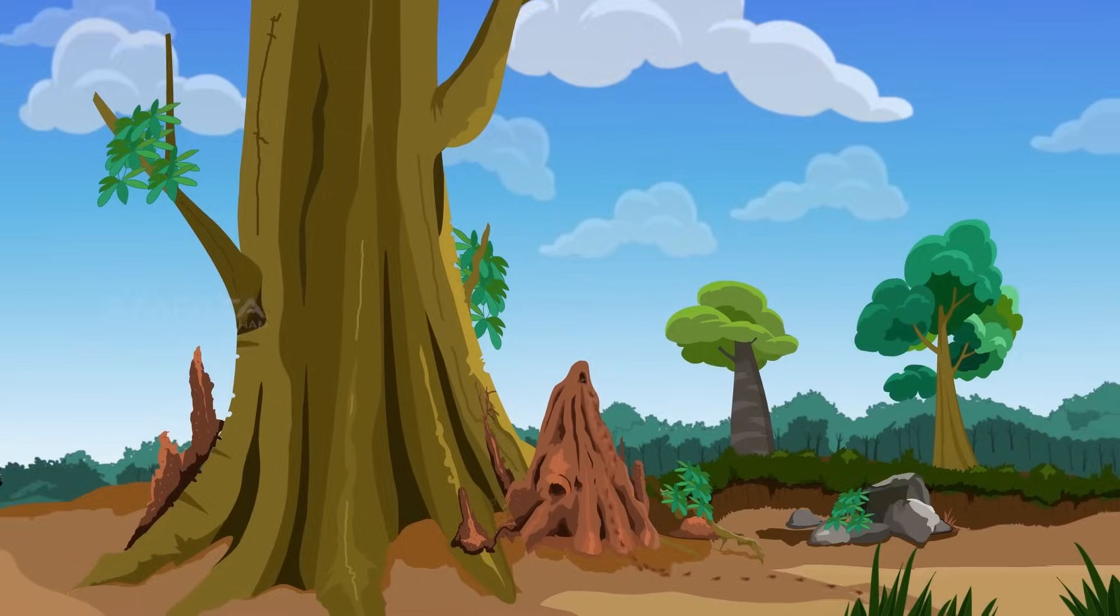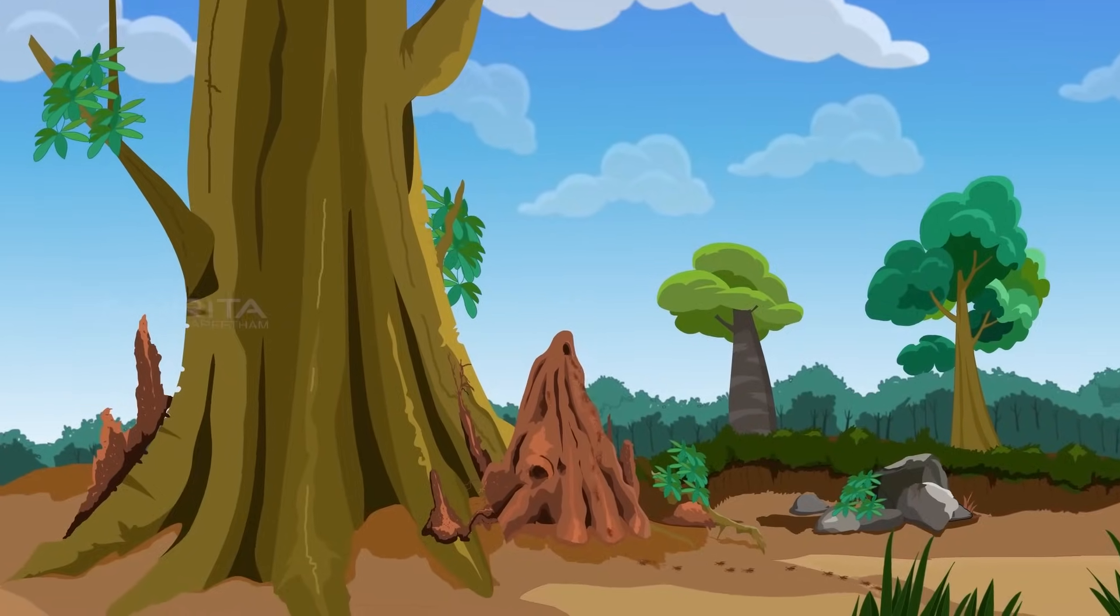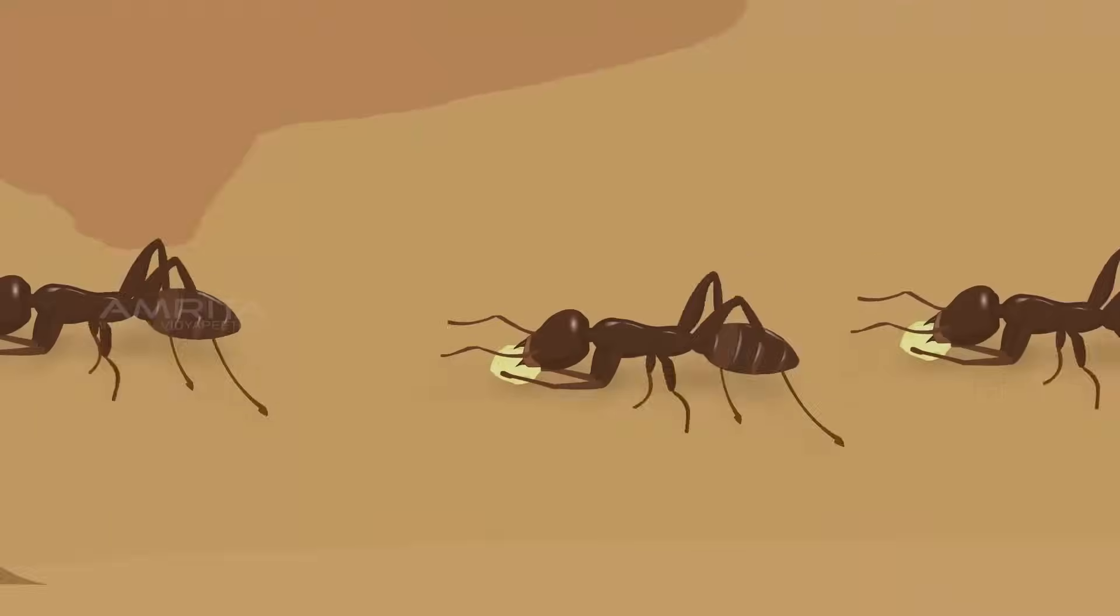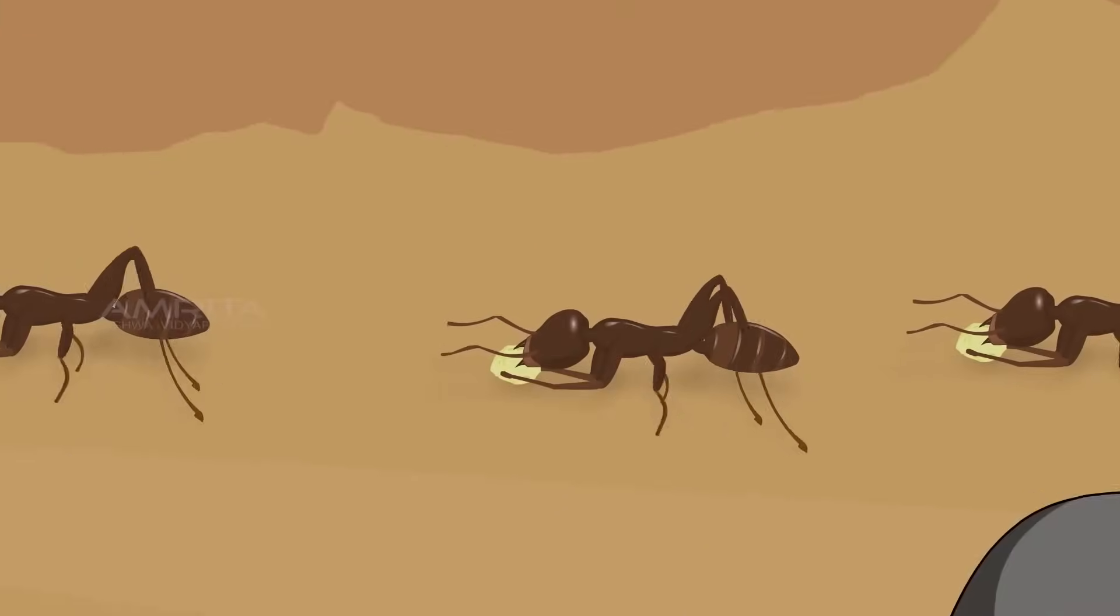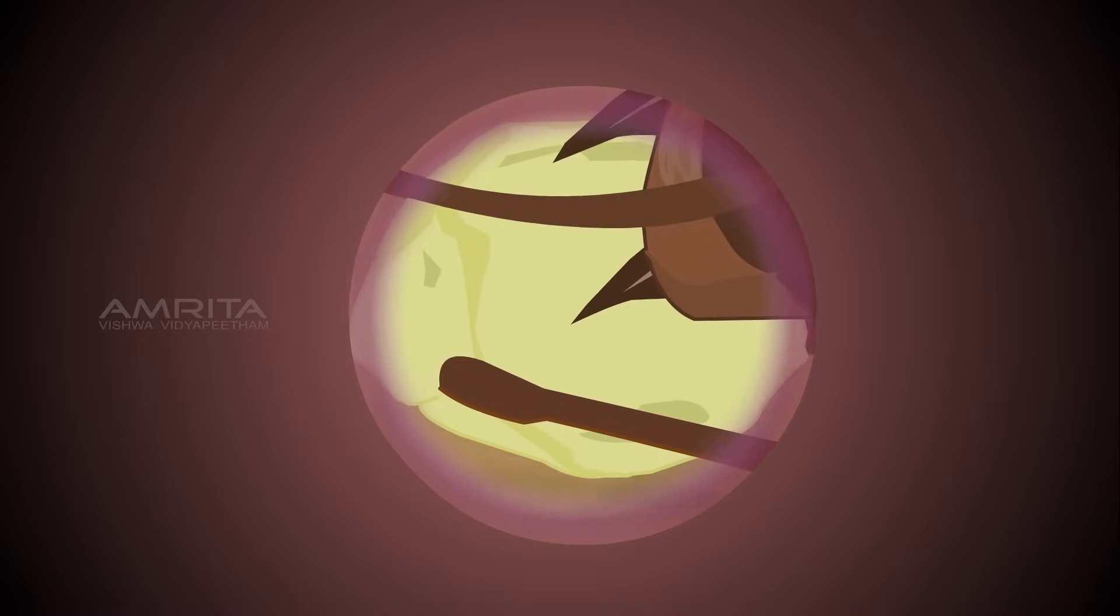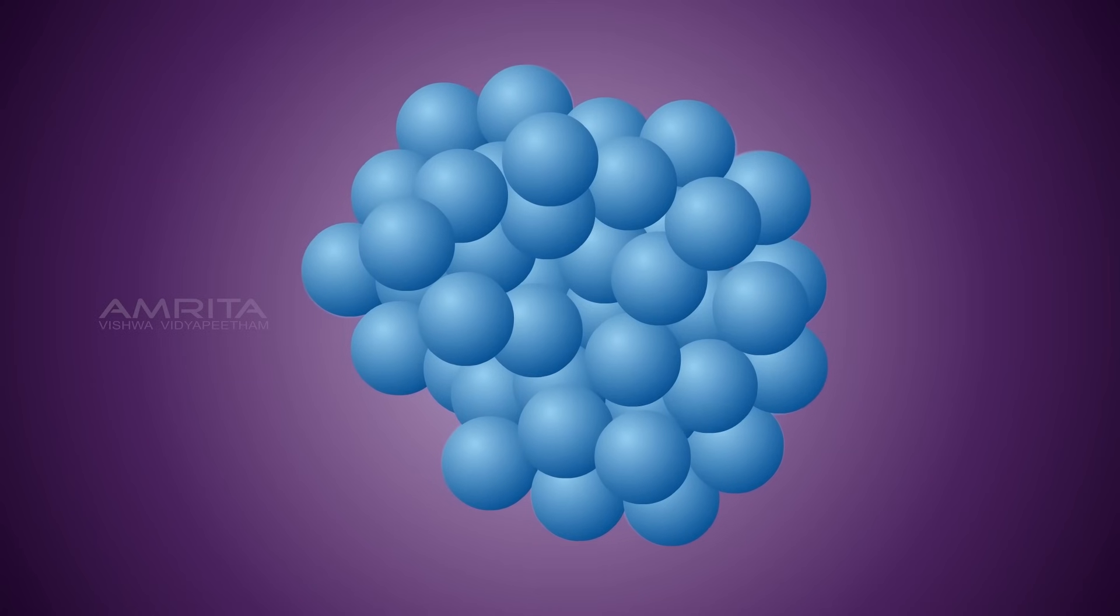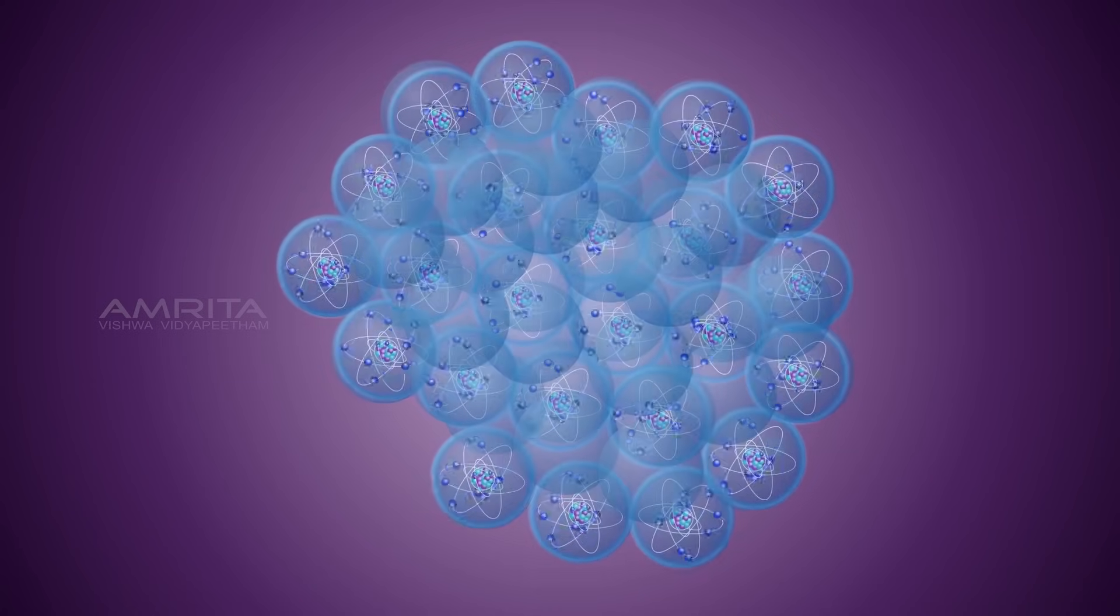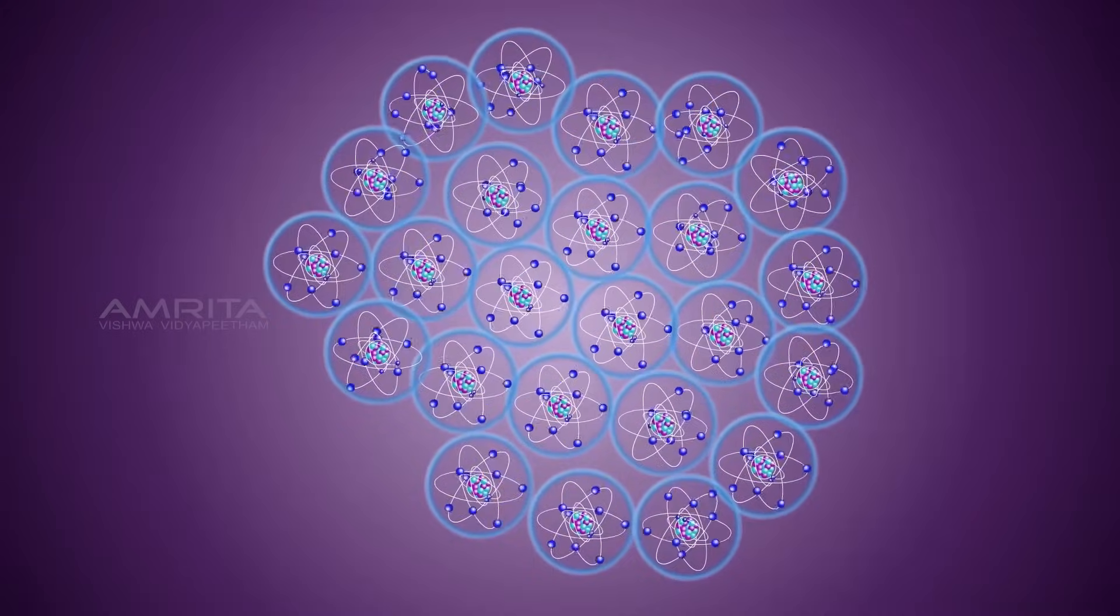Atoms and molecules. This is an anthill - the ants are busy building it. It takes many small grains of sand to make an anthill. If you take a closer look at a grain of sand under a scanning tunneling microscope, you can see that even the small grain of sand consists of millions of particles which are minuscule in nature.